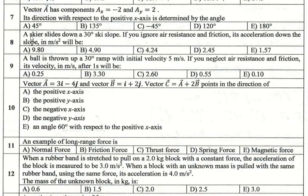Question 8. A skier slides down a 30-degree ski slope. إذن انزلاق على الثلج على سطح مائل بزاوية 30 درجة. If you ignore resistance and friction, find its acceleration down the slope in meters per second squared.